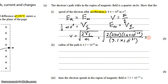When you punch that into your calculator, you should find that the speed is indeed 9.4 times 10 to the sixth meters per second.